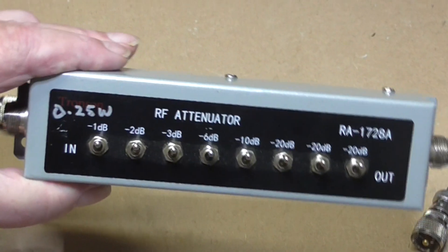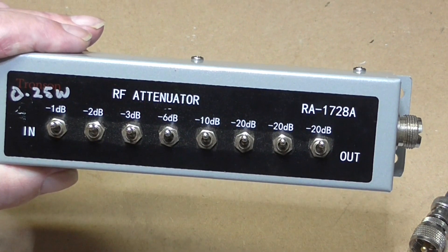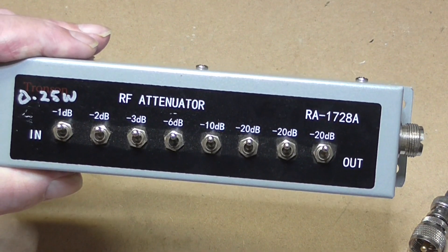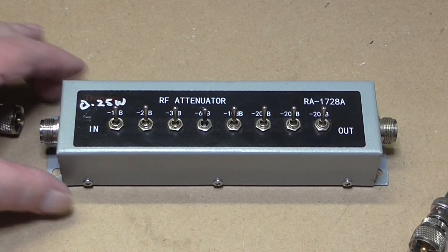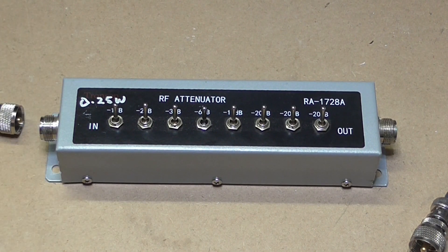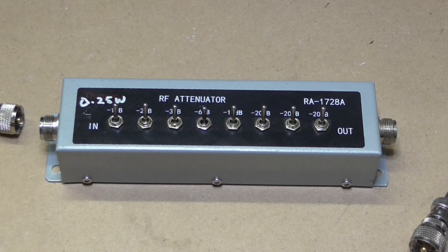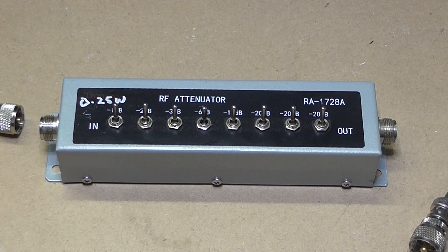Today we're going to look at this RF attenuator, the RA1728A, and test it on the spectrum analyzer to see if it gives us the expected 82 dB attenuation. It's only rated to 0.25 watts and is supposedly capable of 0 to 250 megahertz, so we'll see what happens.